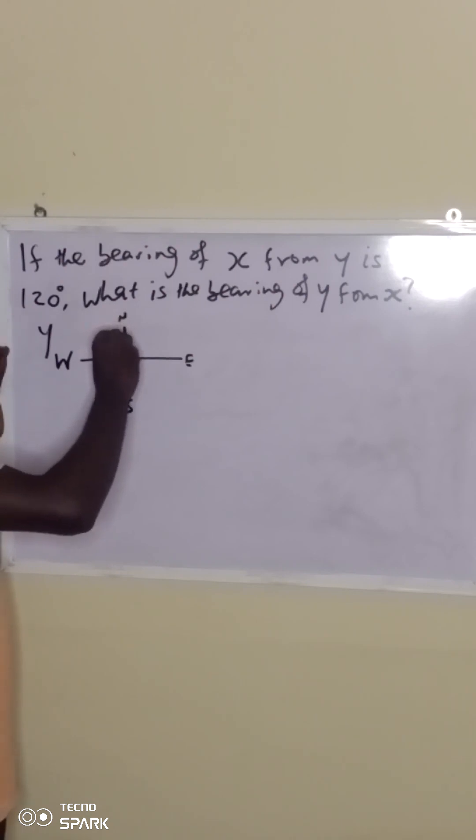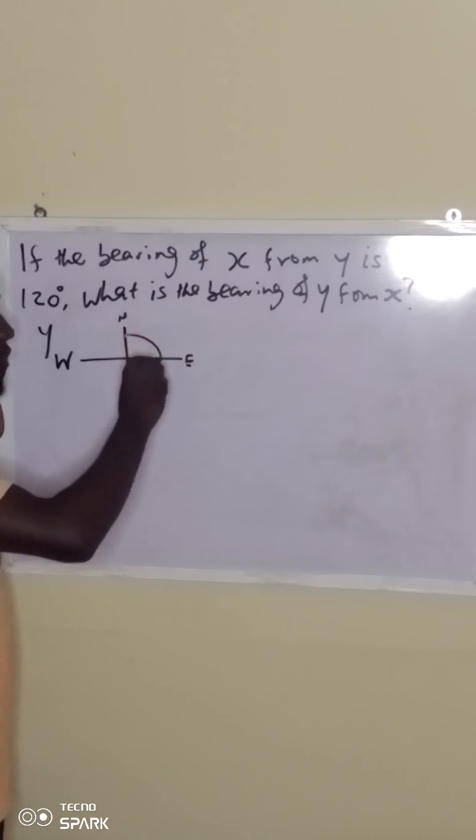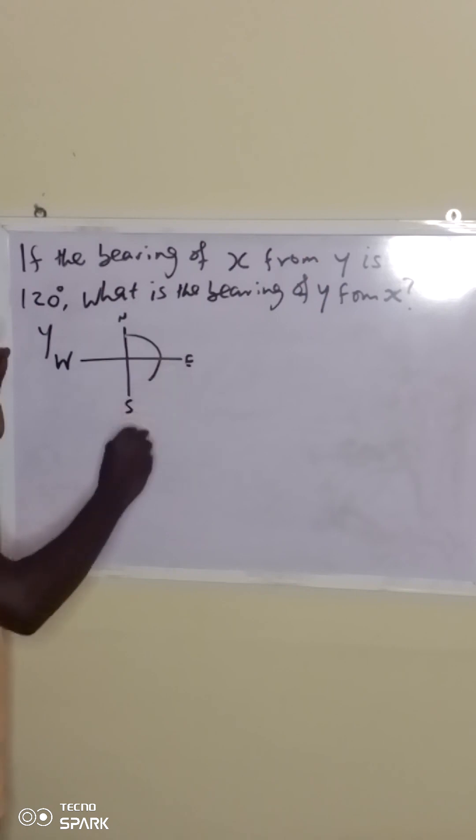Now, you measure 120 degrees, though it's not to scale. So, from here to here is 90. Then, 120 should be between south and east.